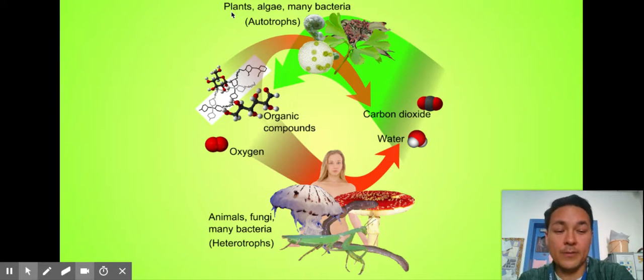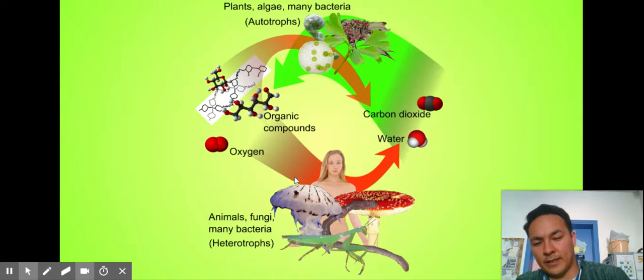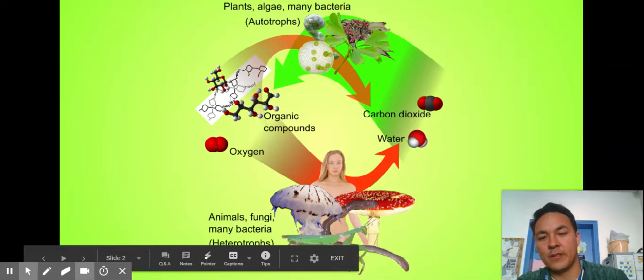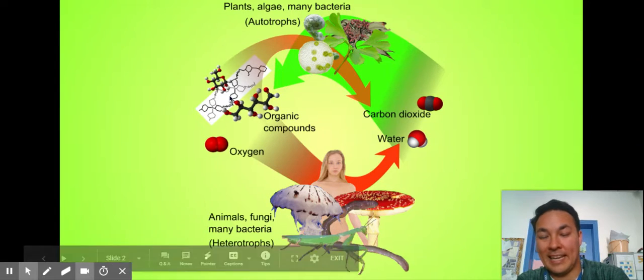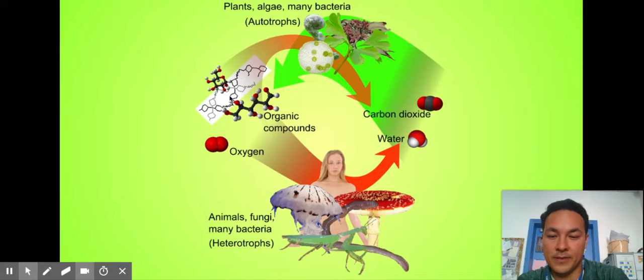So then heterotrophs, like me or you or your dog, are going to take those sugars, those glucose molecules, and that oxygen that was produced, and we're going to use that. We're going to break it down in our mitochondria or in glycolysis, and we're going to make energy. And that energy is in the form of ATP. We're going to release water and carbon dioxide.